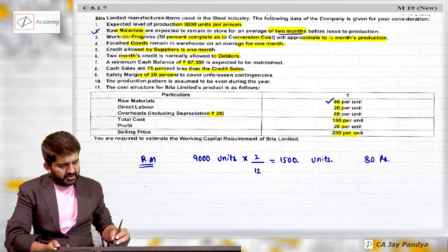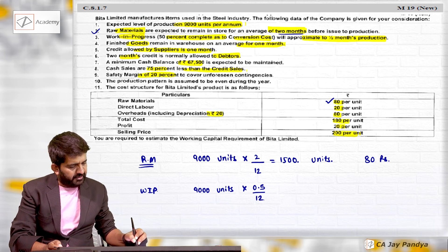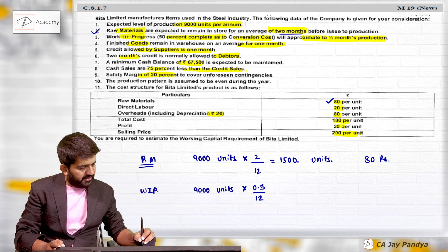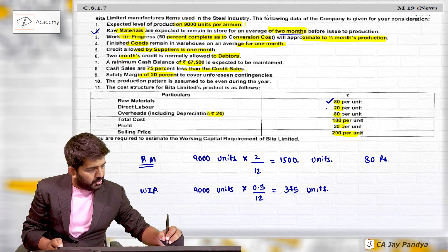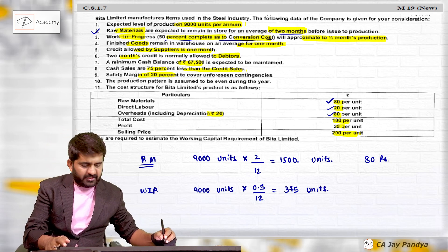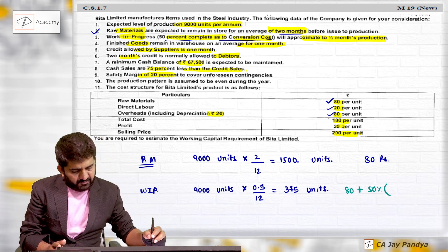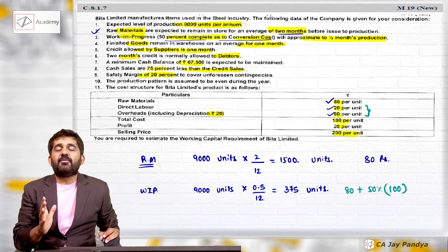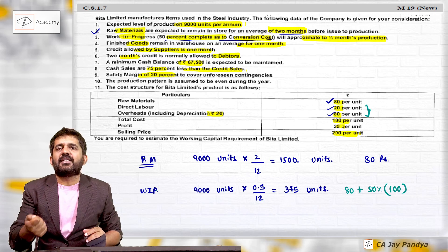For work in progress - 50% completion as to conversion cost, approximately half month's production. WIP = 9,000 units × 0.5 ÷ 12 = 375 units. The rate for WIP should be production cost. Raw material is 100% complete at ₹80, and conversion cost is 50% complete. So conversion cost = (₹20 labor + ₹80 overhead) × 50% = ₹50, making total WIP cost ₹80 + ₹50 = ₹130. Now I need to decide whether to include depreciation or not. Suggested answers are given by both methods; I always take it as a cash cost.